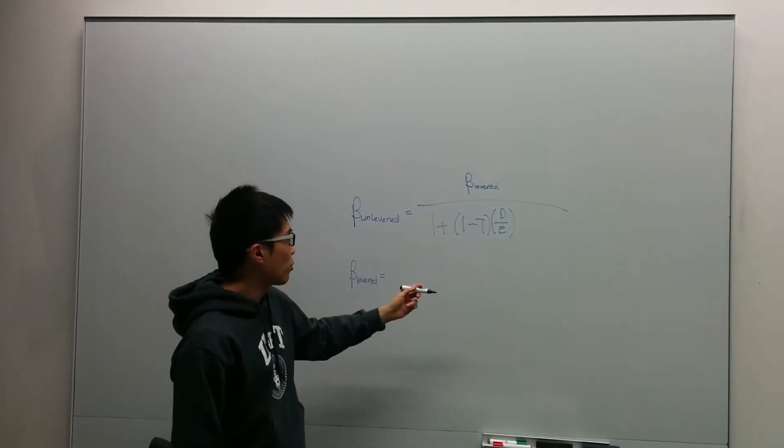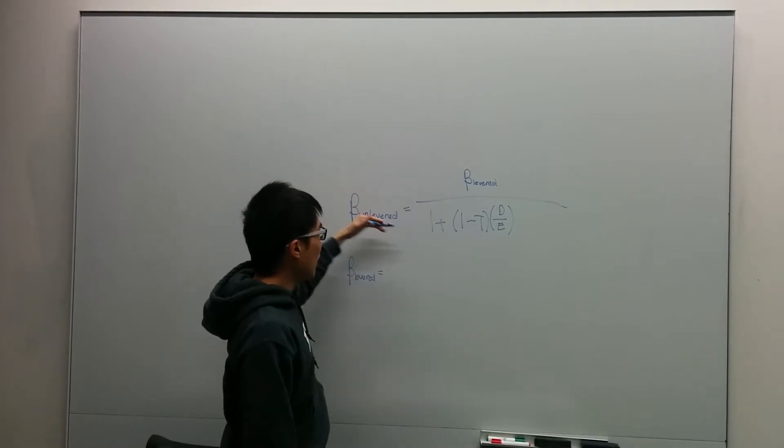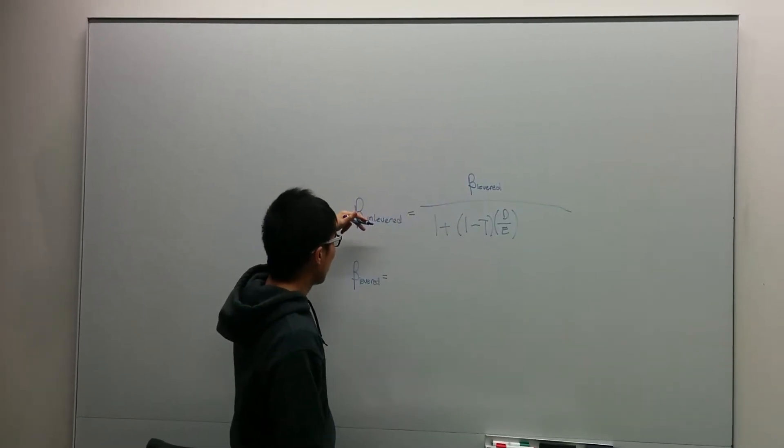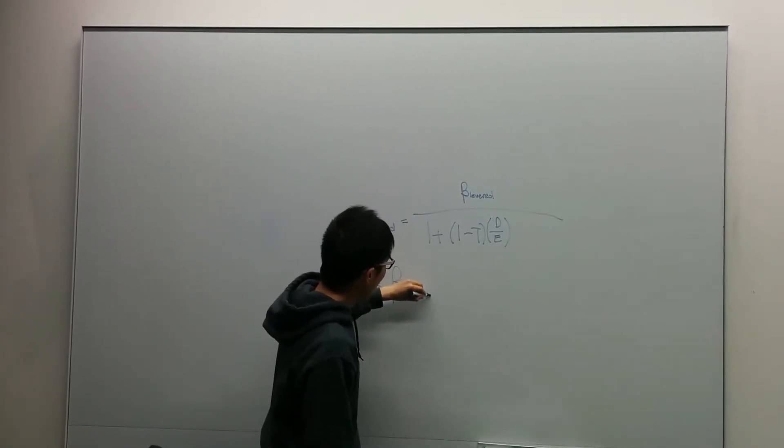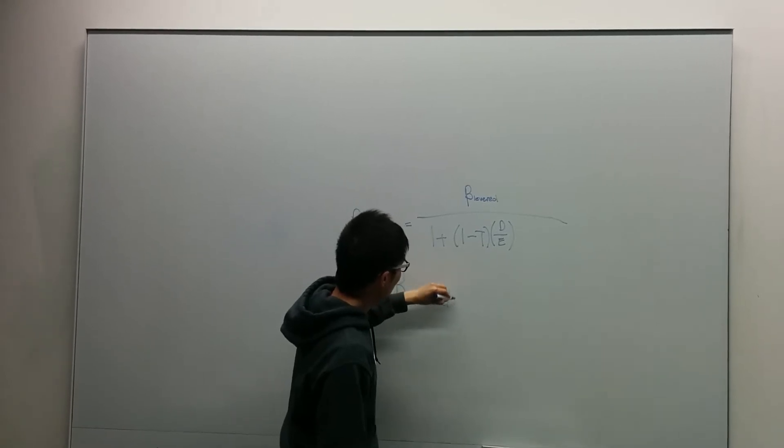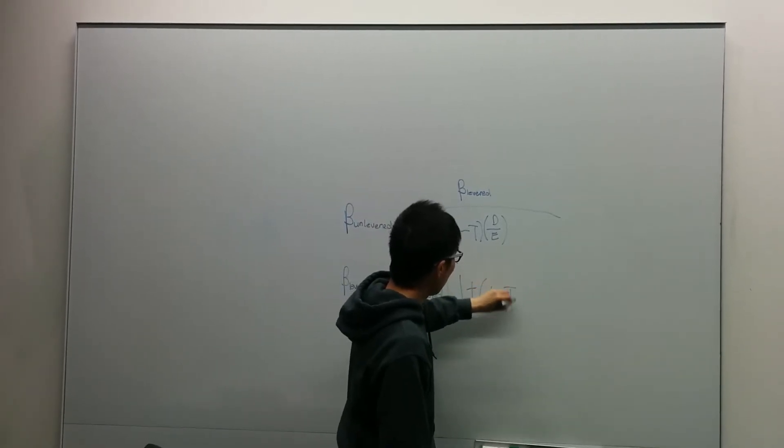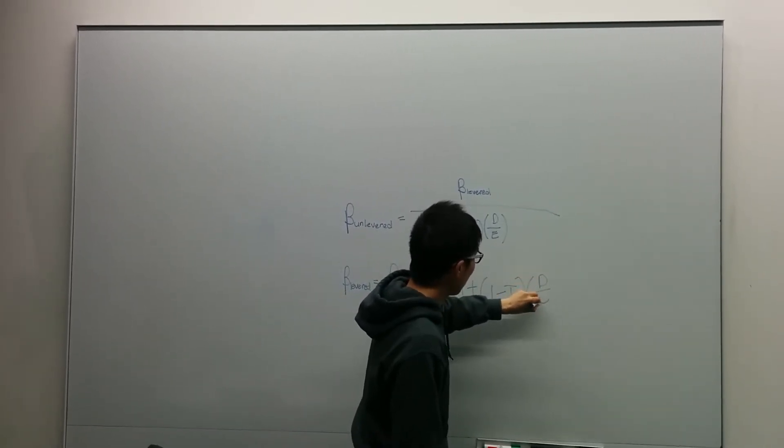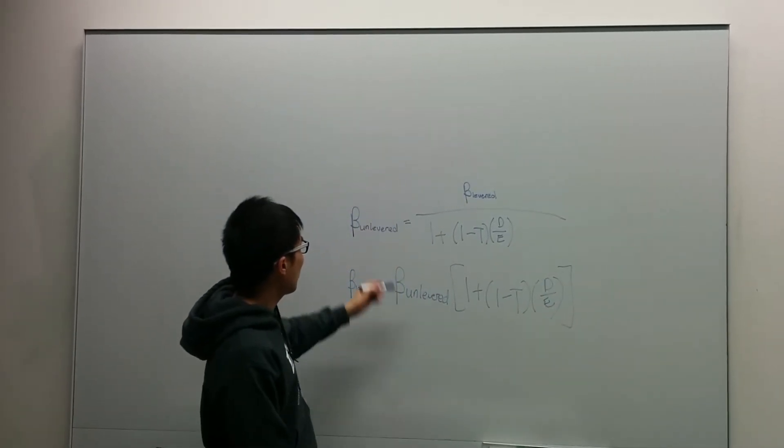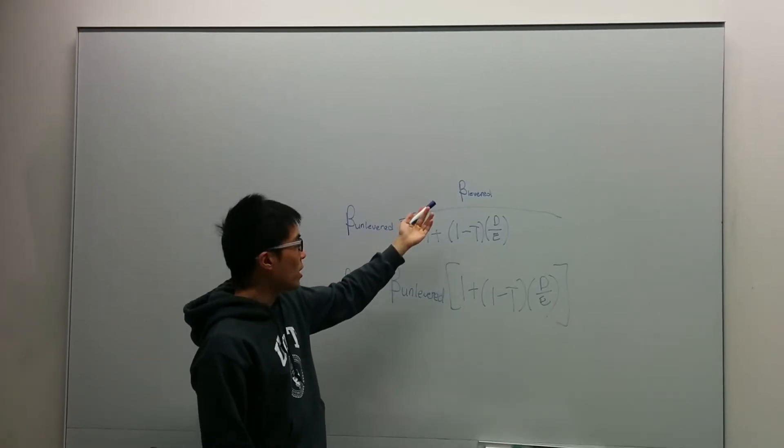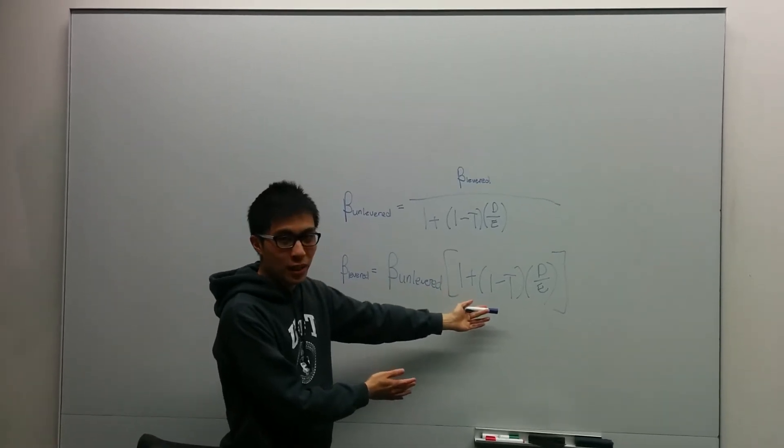When we do it the other way around, using the algebra, your beta levered equals your beta unlevered multiplied by 1 plus (1 minus t) times D over E. I know it looks like a really long formula, but it's actually pretty easy to remember. To unlever your beta, you take the levered beta and divide by this. To get your levered beta, you take your unlevered beta and multiply by this.